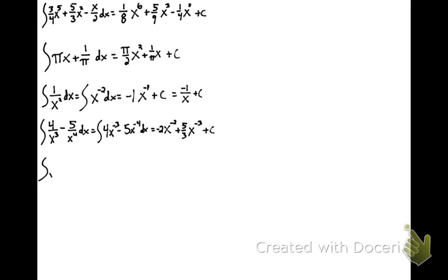What is the integral of the square root of x dx? That's easier to see as x to the 1/2 power. When I integrate that, it must have come from x to the 3/2 power, so it must have been (2/3)x to the 3/2 plus c, because (2/3) times (3/2) is 1. I'm just undoing the power rule.